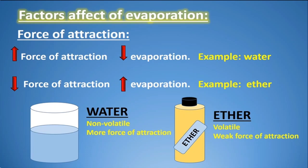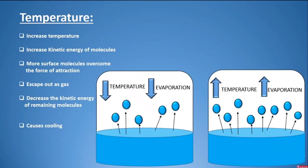In alkanes, all intermolecular forces are London dispersion forces. Remember: alkane → London dispersion forces. Alkane is a class of compound. Petrol will evaporate quickly because its intermolecular forces are weak. Comparing ether and water: in ether, the forces of attraction are weaker, so the rate of evaporation is higher. Weak intermolecular forces lead to a higher rate of evaporation.